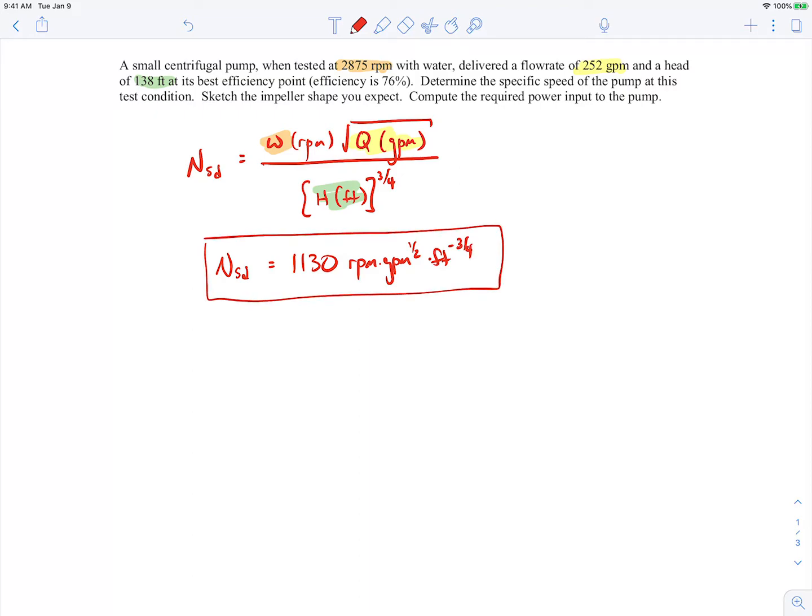You could also do this in the dimensionless form of the specific speed. The conversion between the two looks like this: It's the dimensional specific speed divided by 2,733 RPM gallons per minute to the one-half feet to the minus three-quarters. We could plug this in here and find the dimensionless specific speed as well. And that comes out to be 0.414.